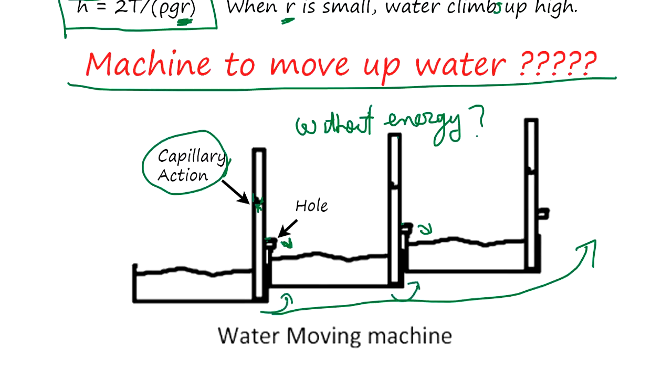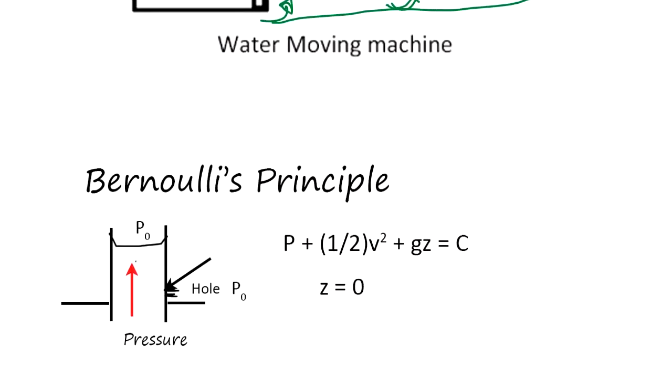You cascade it, you can move higher and higher. Actually somebody proposed this, and not many people can point out where the theory is wrong. Can you tell? You need to know one more thing: Bernoulli's principle.